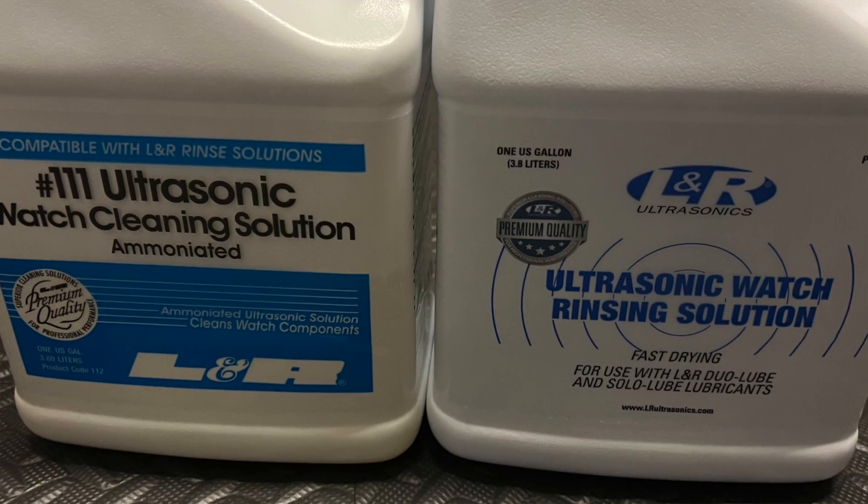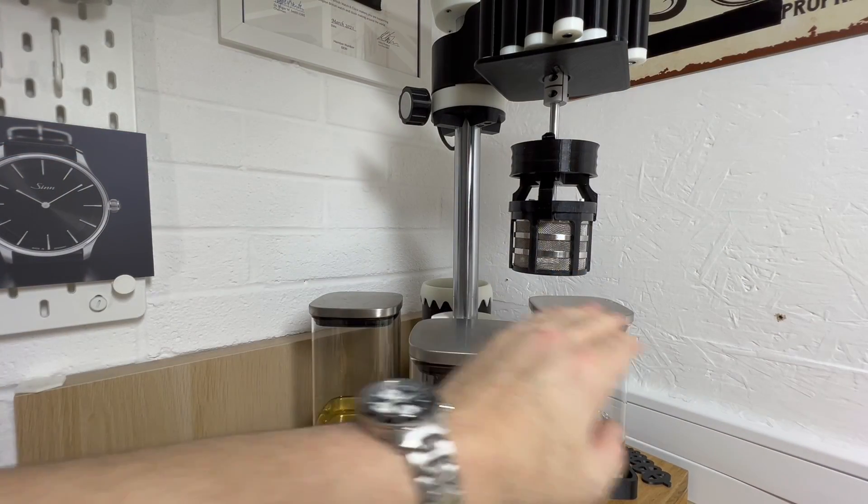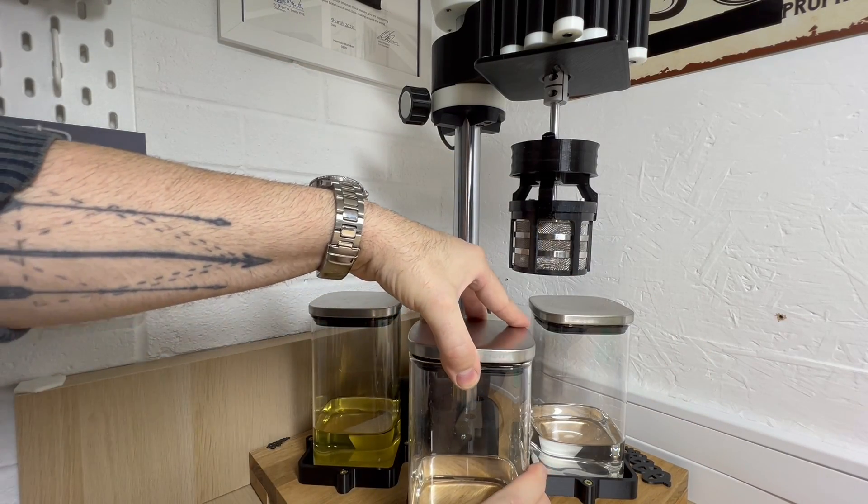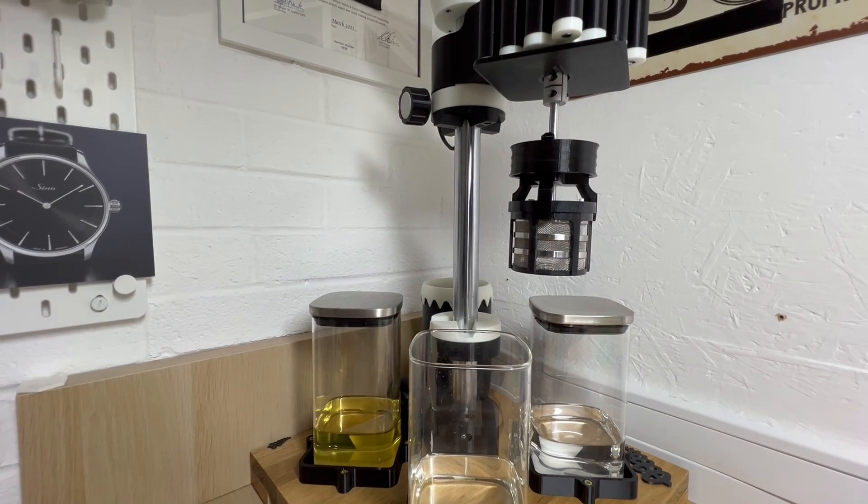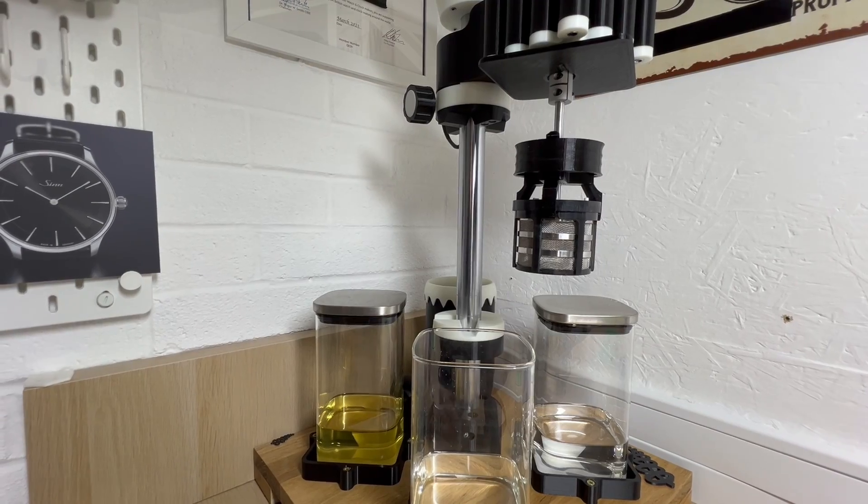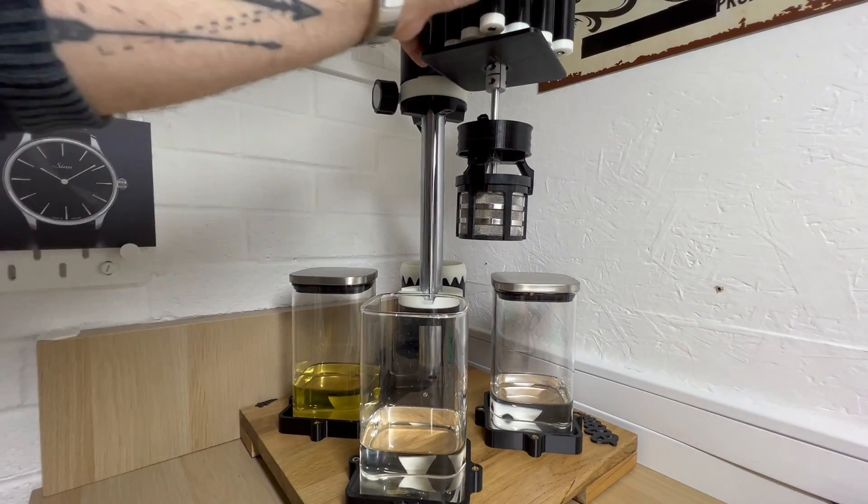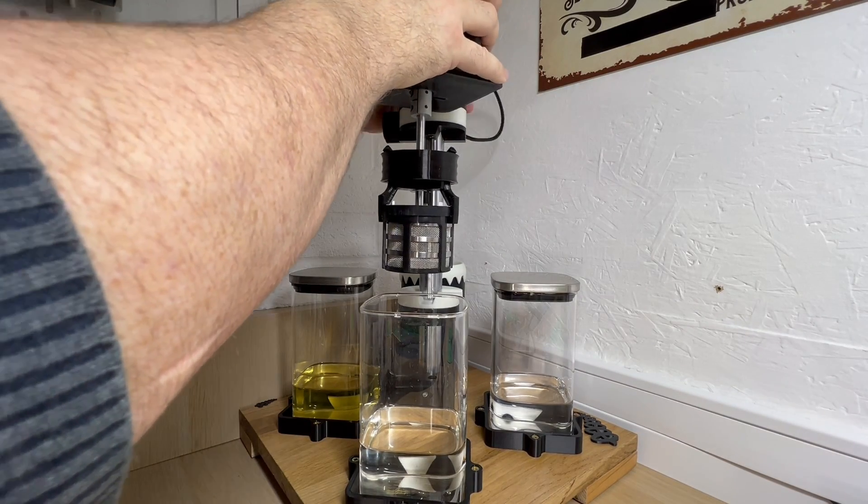Now what you would do, how you operate this: the first cycle you would do once you've got your watch movement fully stripped down is where you put it in first. I'm using Elma Cleaner. As you can see, I've been using it a bit because this has started to go quite cloudy. You'll use this cycle first, then rinse one, rinse two, and heat.